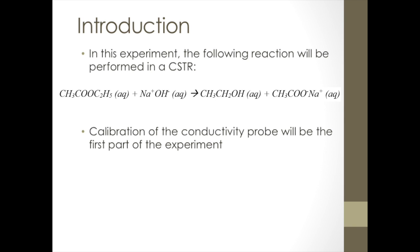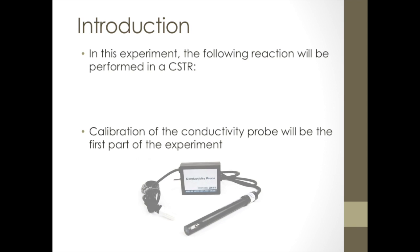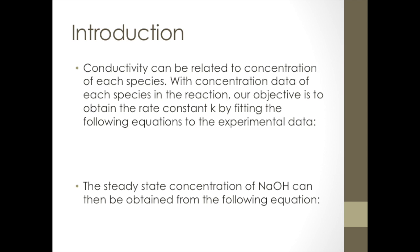To do this, however, we must first calibrate the conductivity probe to relate the conductivity to the amounts of both species present. The conductivity of the system can then be related to concentration of each species. With concentration data of each species in the reaction over time, our objective is to determine the rate constant, K, by fitting the following equations to the experimental data.